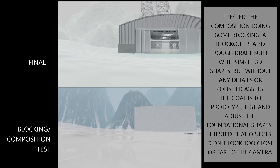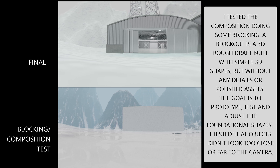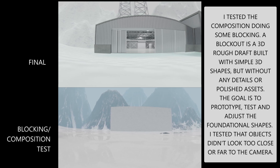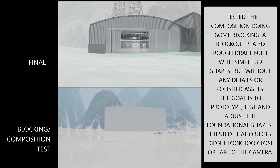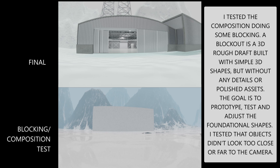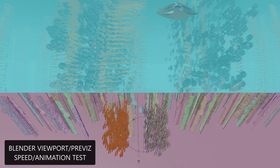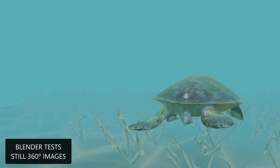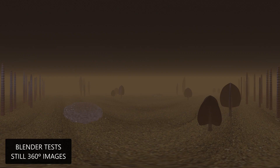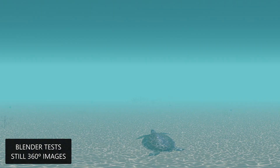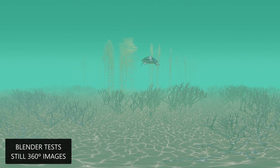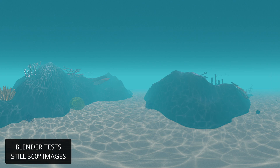After the pre-production, during the production, I also tested other things as the project progressed. I tested the composition, doing some blocking, tested the animation speed, etc. These tests are usually made in a lower resolution. I also made one still image of each scene to see the size of the objects, the color schemes, and the mist pass values.